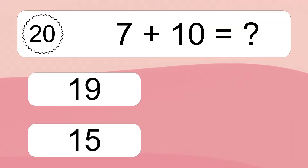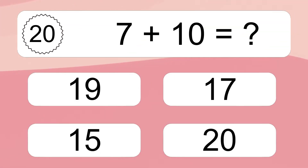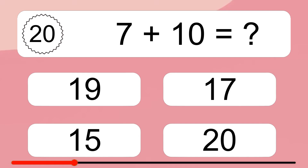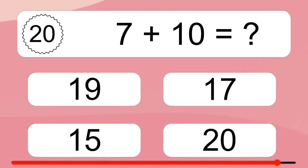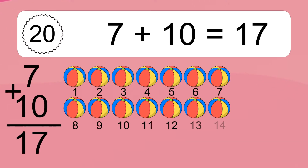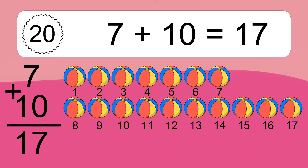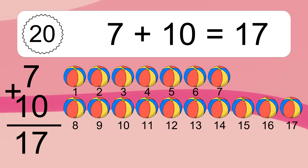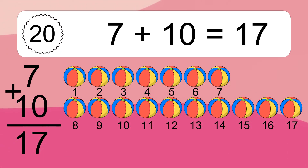7 plus 10 equals what? 7 plus 10 equals 17. Let's count it. 1, 2, 3, 4, 5, 6, 7, 8, 9, 10, 11, 12, 13, 14, 15, 16, 17.